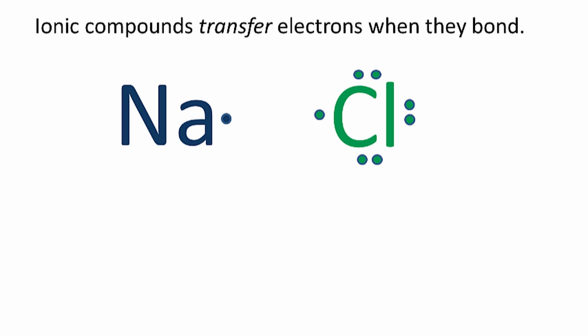So we have sodium with its one valence electron and chlorine has its seven valence electrons. The sodium is going to transfer its one electron to the chlorine. When it does that, the chlorine now has eight valence electrons, so it has an octet with a full outer shell.